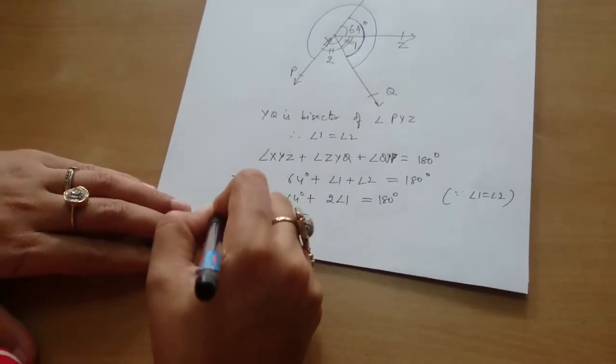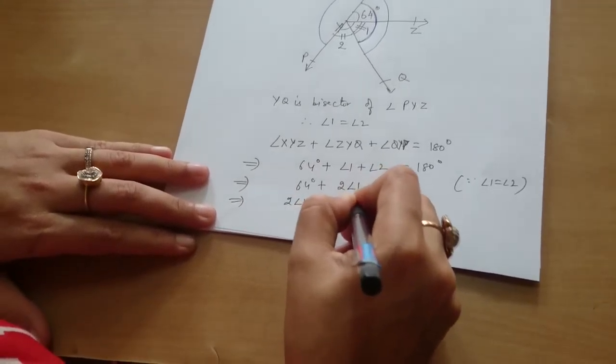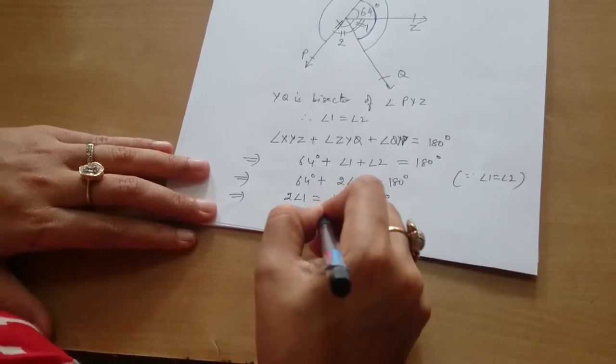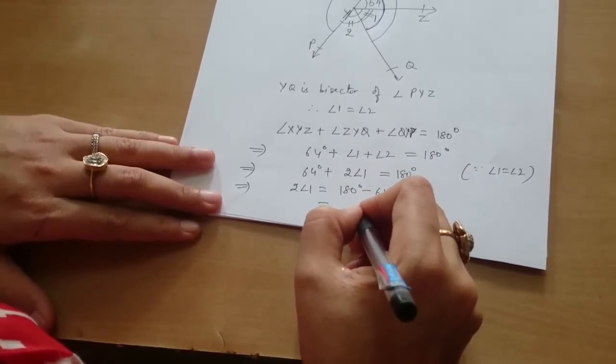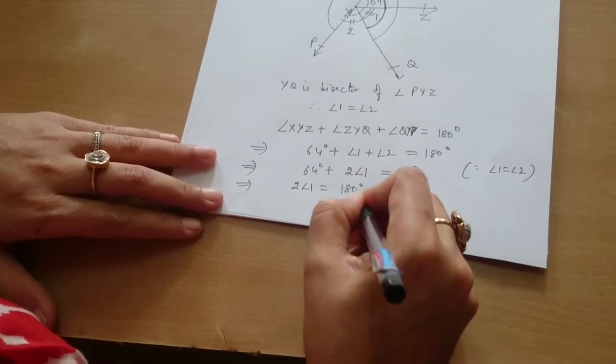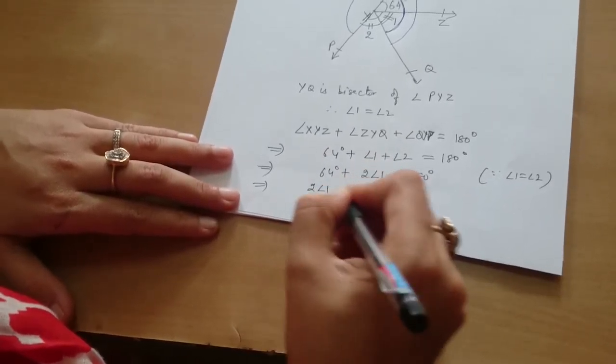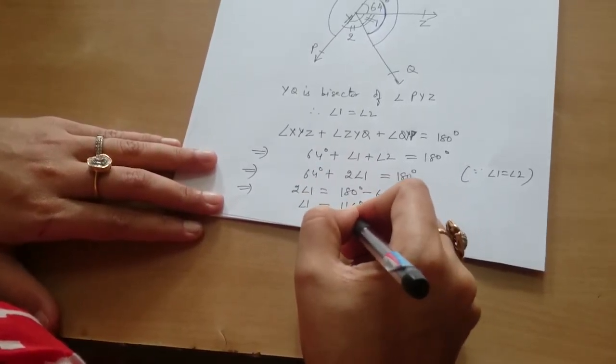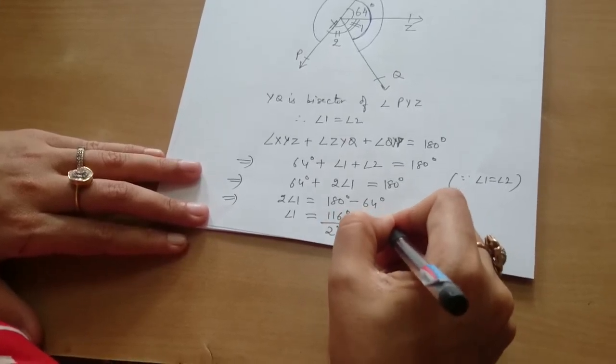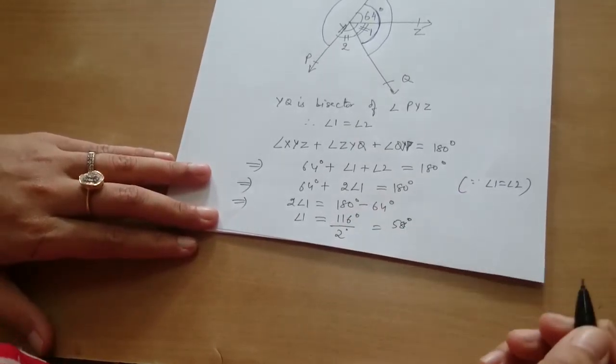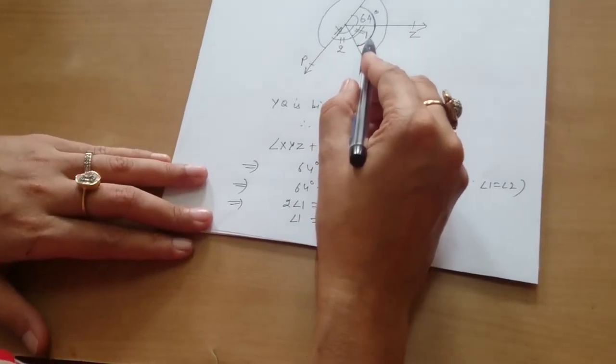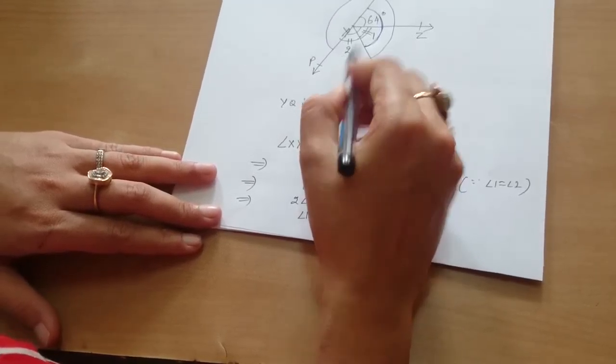So twice of angle 1 is equal to 180 degrees minus 64 degrees, which is equal to 116 degrees. So angle 1 is equal to 116 divided by 2, 58 degrees. So angle 1 is 58 degrees. Angle 2 is 58 degrees.